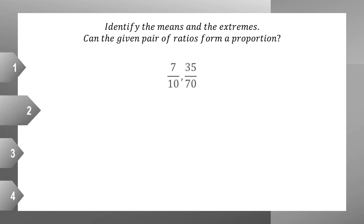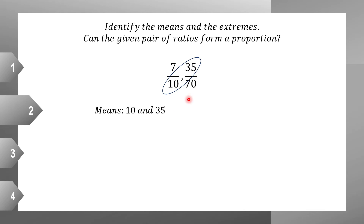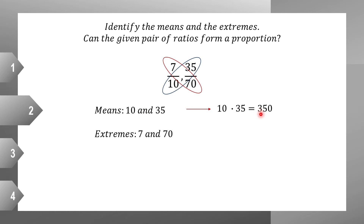Number 2: 7 over 10 and 35 over 70. The means are 10 and 35, while the extremes are 7 and 70. The product of the means is 10 times 35, equal to 350, while 7 times 70 is equal to 490. Since their products are not equal, this pair of ratios did not form a proportion.